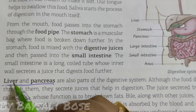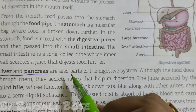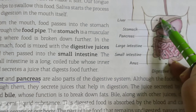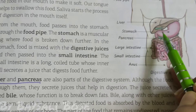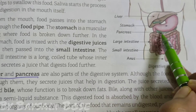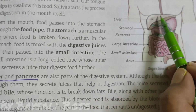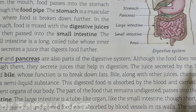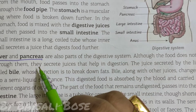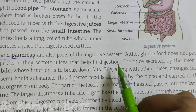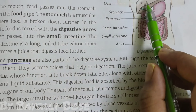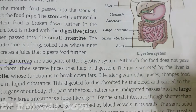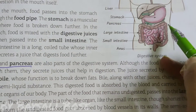Liver and pancreas are also part of the digestive system. Food does not pass through them, but they secrete juices that help in digestion.